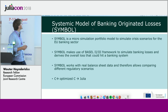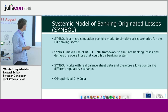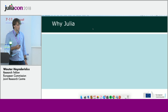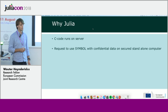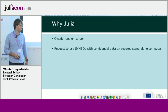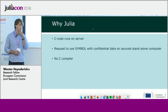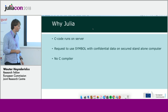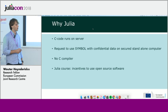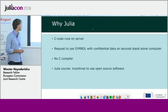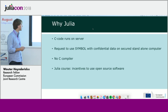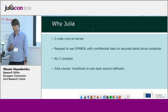The first model was originally written in C, then colleagues optimized it in C, and now I have ported it to Julia. Why Julia? The C code runs on a server and mostly that's fine, but we got a request to use SYMBOL with confidential data on a standalone computer. The issue was we no longer had a C compiler. Also, the C code is hard to read, so we decided to rewrite it in Julia. Our unit organized a two-day Julia course, which gave us an incentive to use Julia more in our day-to-day work — since our unit mostly uses MATLAB — and there is a strong European Commission push toward open source software.